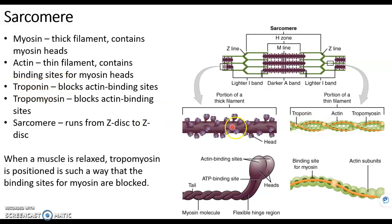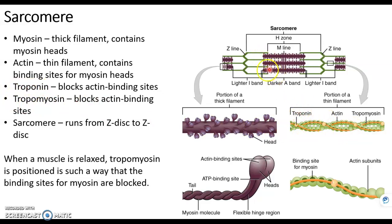Those two blocking proteins are troponin, which you see as yellow circles here, and tropomyosin — the two T's — which are these yellow strings. So as long as troponin and tropomyosin are blocking the active sites on actin, myosin cannot grab on.